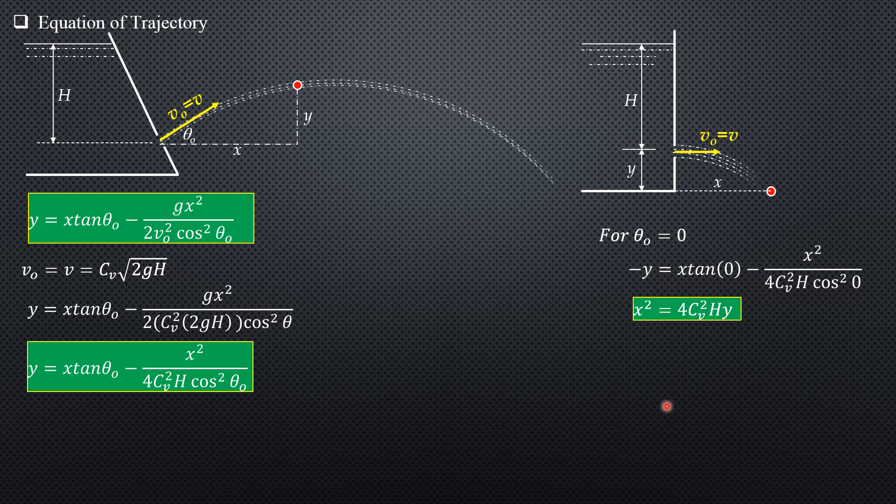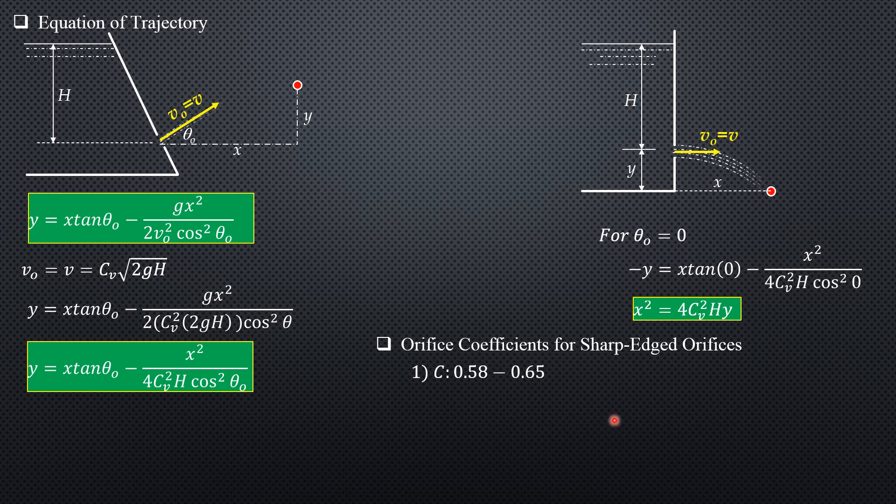Then for the experimental orifice coefficients for sharp edge orifice, the range of values of C is from 0.58 to 0.65—that's the usual range when you conduct an experiment. For C_v, it is from 0.95 to 0.99.